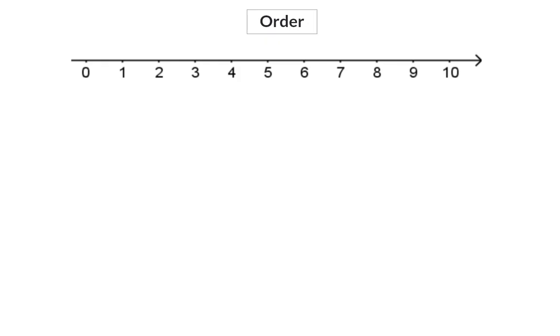When ordering numbers, you can either order them from smallest to biggest, which is increasing order, or from biggest to smallest, which is decreasing order.